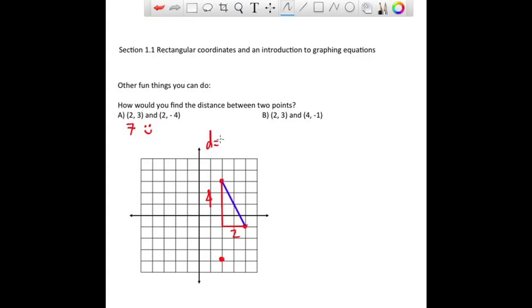Use Pythagorean Theorem, take the square root of 4 squared plus 2 squared. In this case, it's 4 plus 16, so the square root of 20, which is 2 square root of 5 if you simplify it.